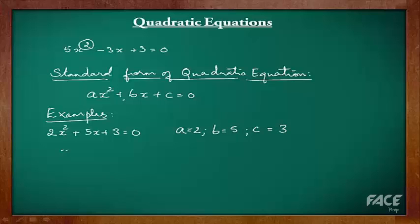Next example: x² - 3x = 0. This one is a little bit more tricky. Where is a? Well, a here is equal to 1 and we don't usually write 1. b here is minus 3, and c is missing — hence, c is equal to 0.